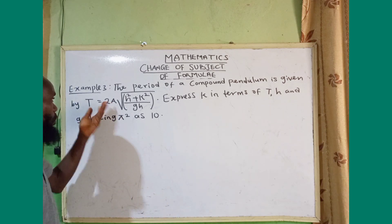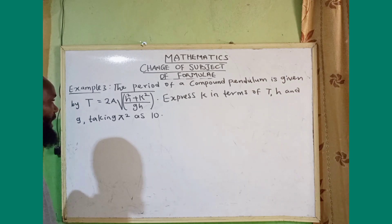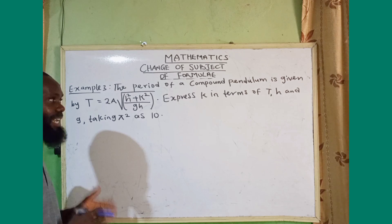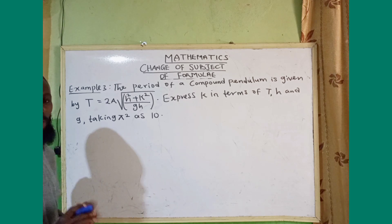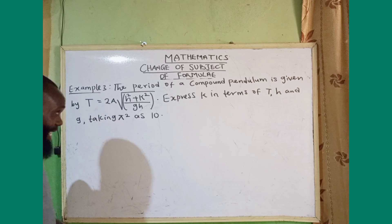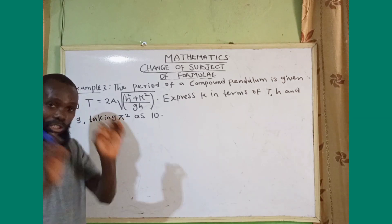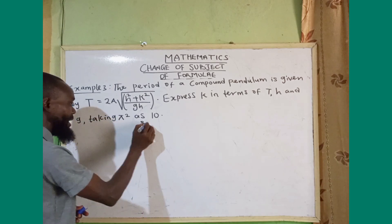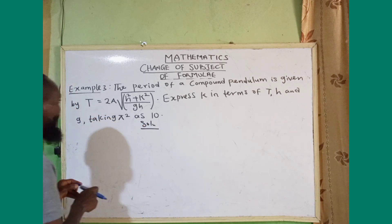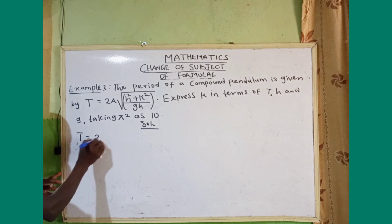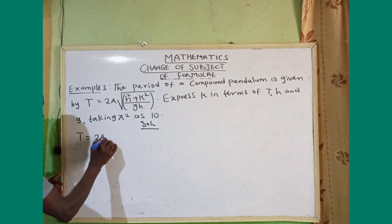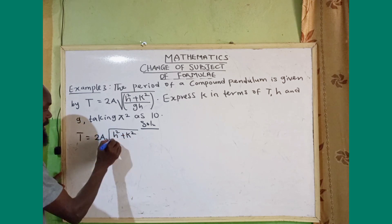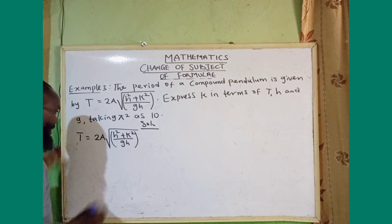Example three: the period of a compound pendulum is given by t equals 2π times the square root of h squared plus k squared divided by gh. Express k in terms of t, h, and g, taking π squared as 10. We need to make k the subject of the formula.